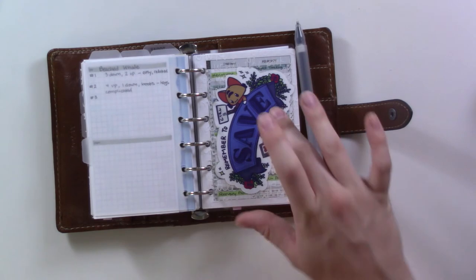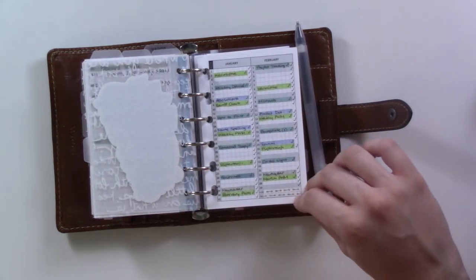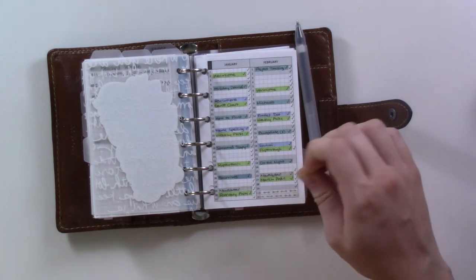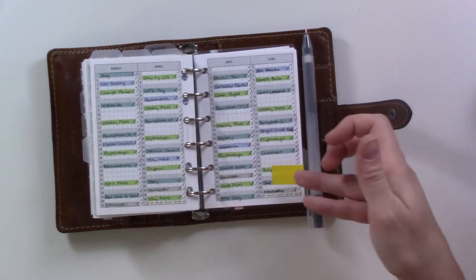This next section is content planning. This is the spread from Summer Tosh that I use for planning my content just for the whole year on this one spread. I'm not going to show you the rest of what's in this section because it's private.